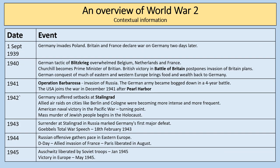The Second World War began in September 1939 with Germany invading Poland and Britain and France declaring war on Germany two days later. Germany used the tactics of the Blitzkrieg to overwhelm countries like Belgium, the Netherlands and France in 1940. Churchill became Prime Minister of Britain and British victory in the Battle of Britain postponed the Nazis' invasion plans. Germany conquered much of Eastern and Western Europe, bringing food, wealth and resources back to Germany. A big turning point was in 1941: Operation Barbarossa saw the invasion of Russia and the German army became bogged down in a four-year battle.